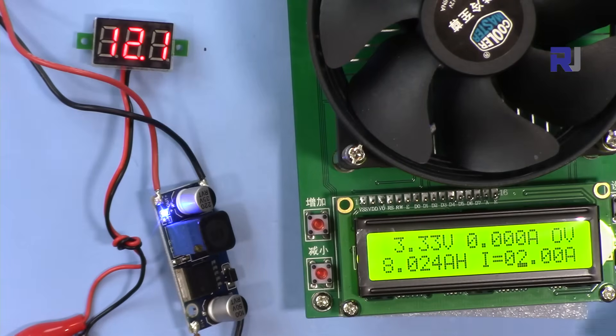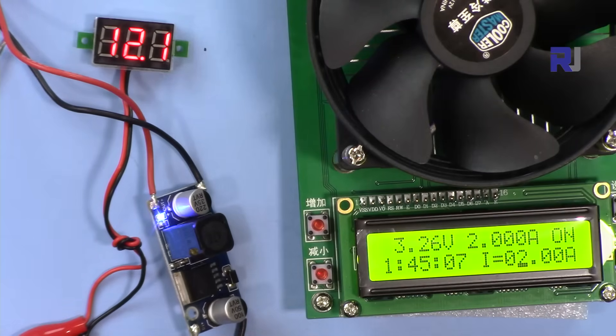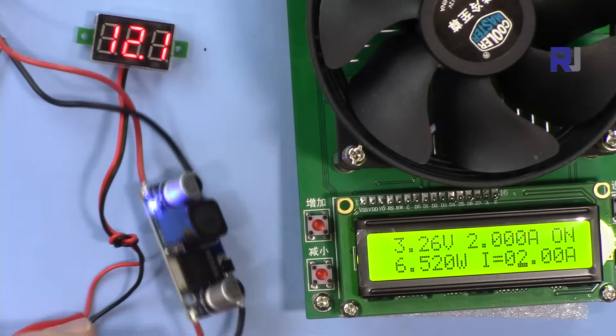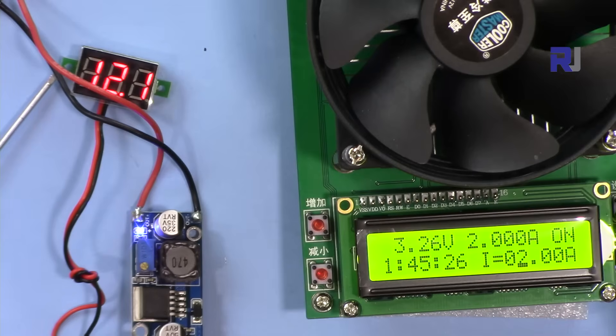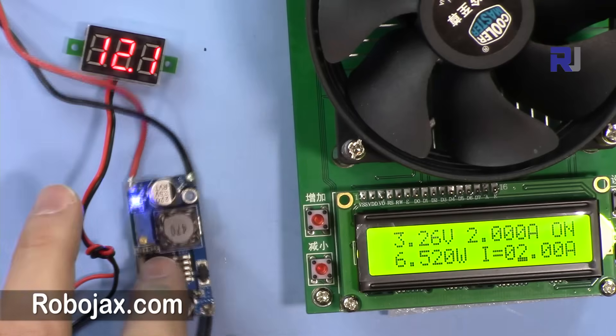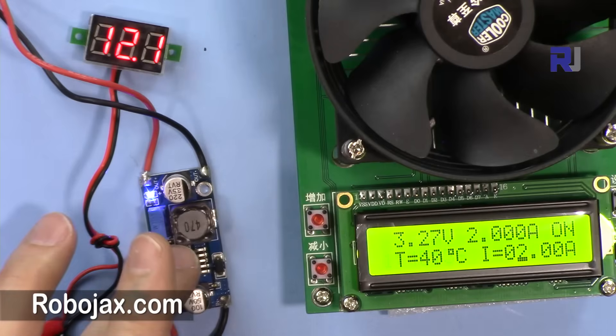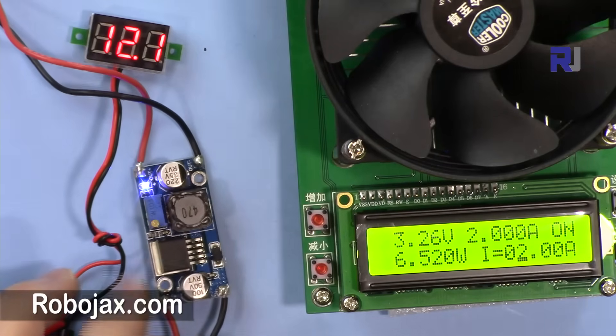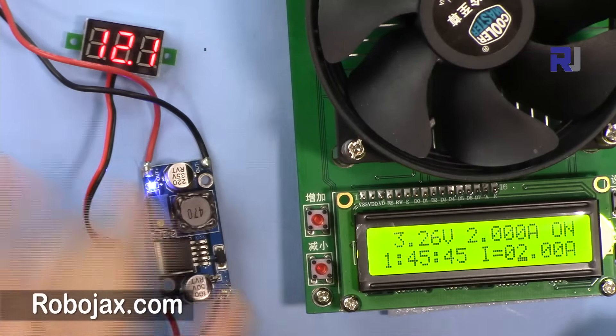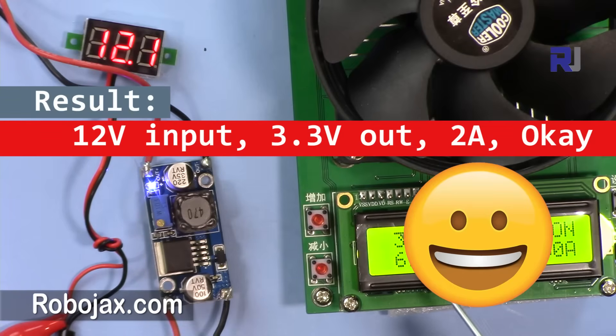So with 2 amp still it's hot. I can touch it, it's hot. I cannot hold it for a long time but it's very cooler comparing to the previous 2.5 and 3 amp. So 12 volts input, 3 output with 2 amp, that's good.